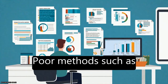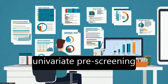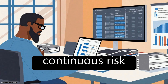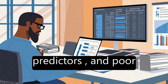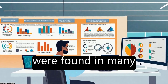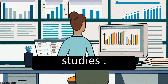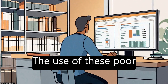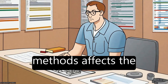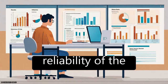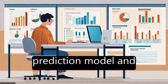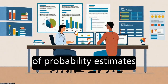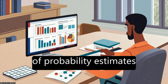Poor methods such as univariate prescreening, categorization of continuous risk predictors, and poor handling of missing data were found in many studies. The use of these poor methods affects the reliability of the prediction model and compromises the accuracy of probability estimates.